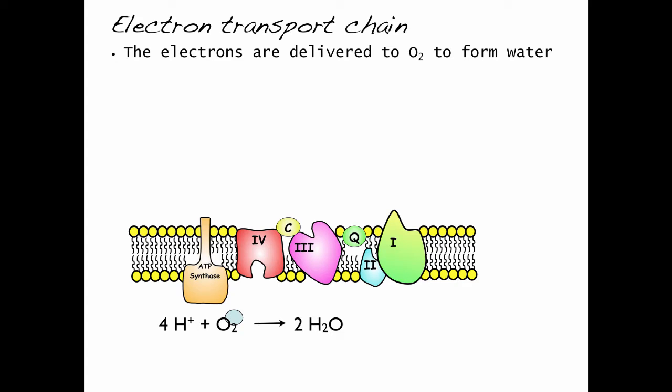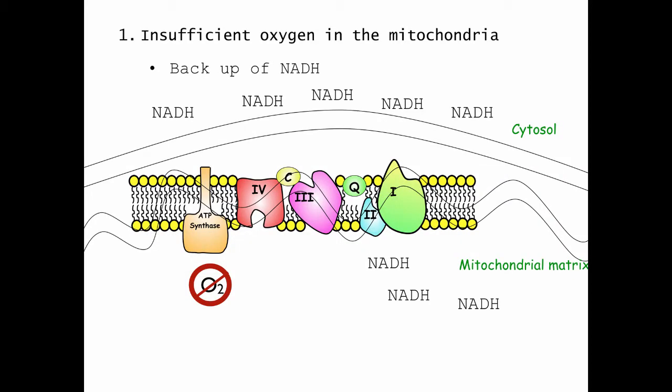Now, in order for the electron transport chain to function, oxygen needs to be present. And without oxygen present, we get a backup of NADH. Like I said, with insufficient oxygen present within the mitochondria, we get a backup of NADH.